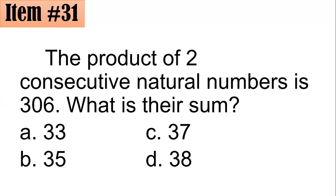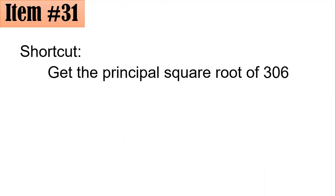I will just present to you the shortcut. All you have to do is get the principal square root of 306. Principal square root means the positive square root of 306. Using your calculators, you could see that the square root of 306 is approximately 17.48, and 17.48 is between what two integers?